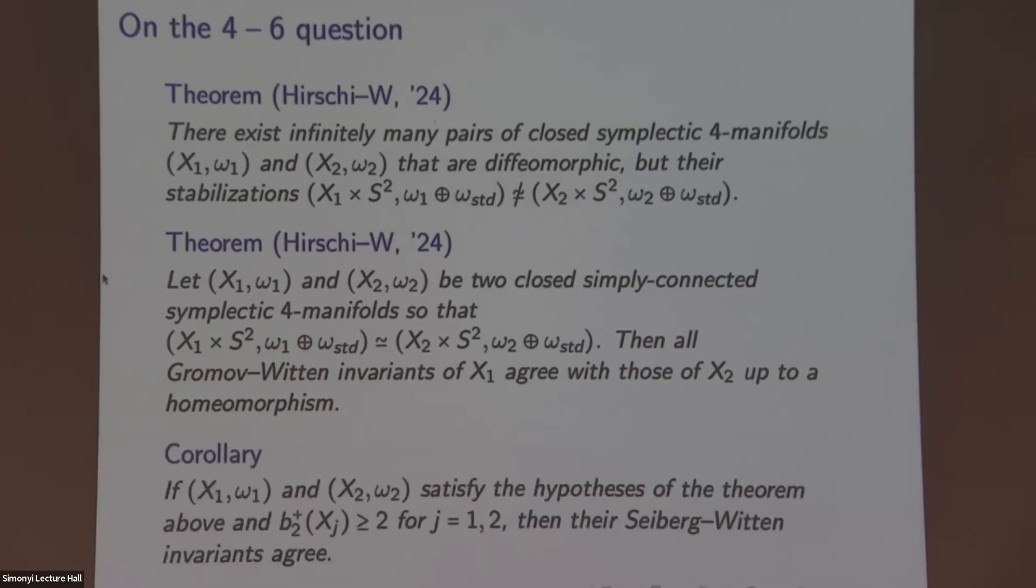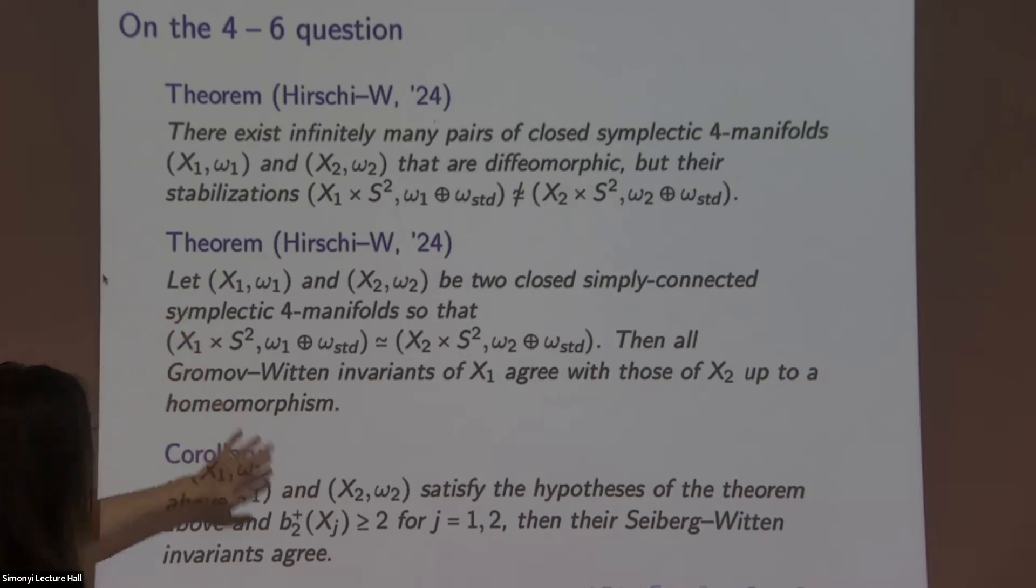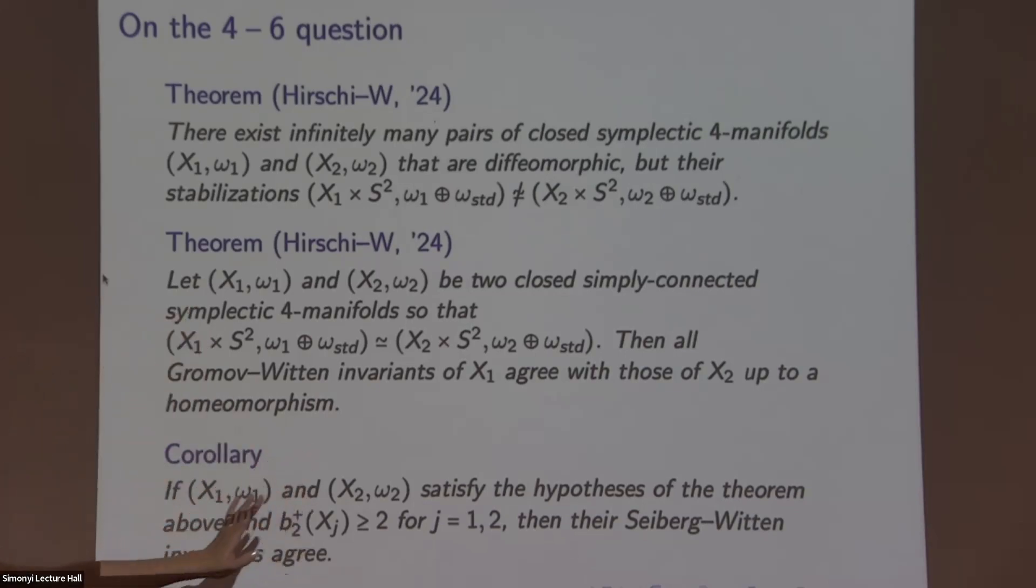And as a corollary of that, by applying works of Taubes and Yanko Parker, and joint with Amanda Hirschi, and also, so this is by joint with Amanda, a corollary is that for the symplectic, there are two closed simply-connected symplectic four-manifolds whose stabilizations are deformation equivalent. These four-manifolds are... their Seiberg-Witten invariants all agree. This is not as good as diffeomorphic, but Seiberg-Witten's are kind of the only invariants we have to distinguish structures currently.